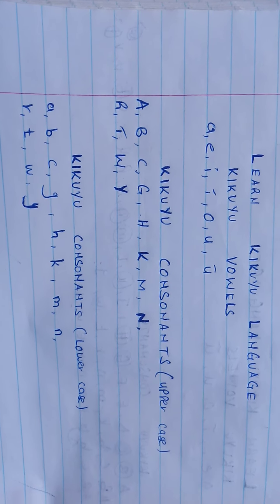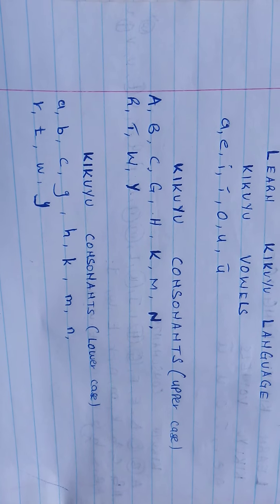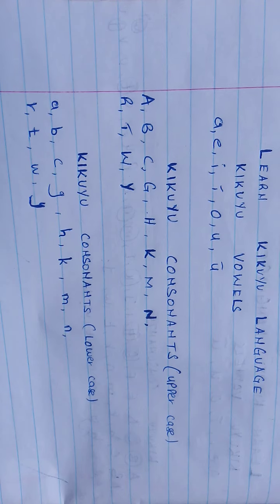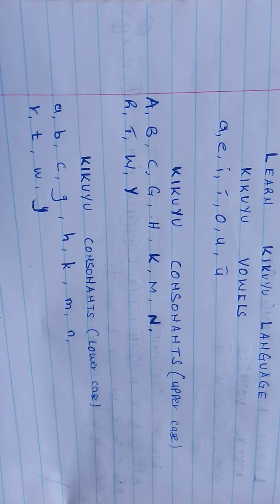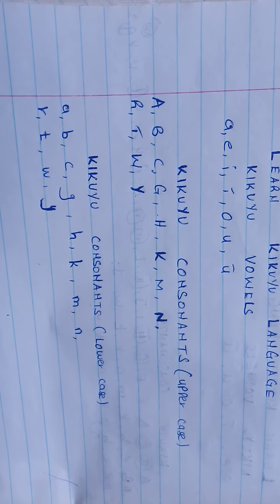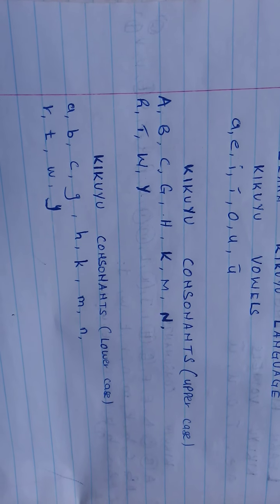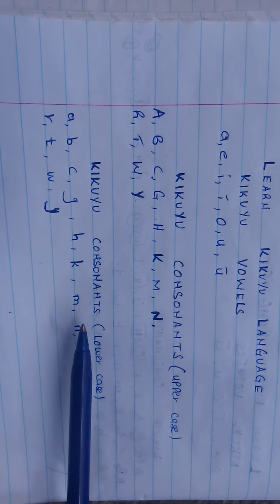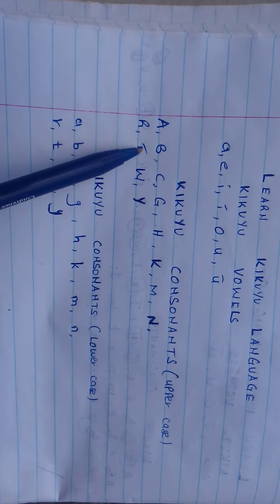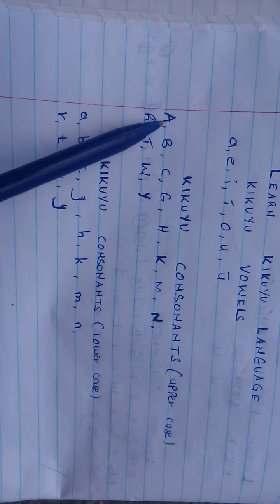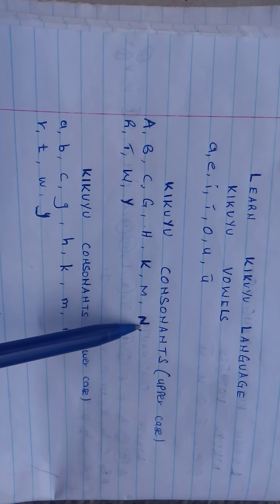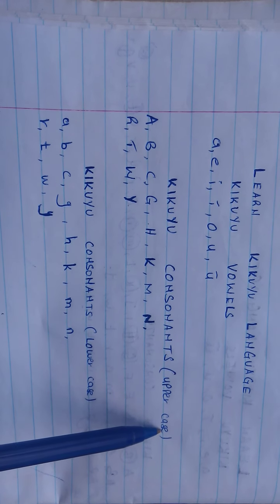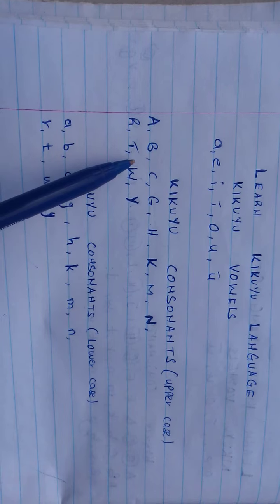Those are called the Kikuyu vowels and they are seven in number. Then we have the Kikuyu consonants. This comes from the consonants that we know in English and these are the ones that exist in Kikuyu. And this is how they are written and in this case in the upper case.